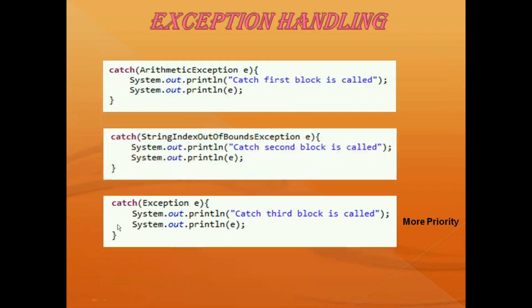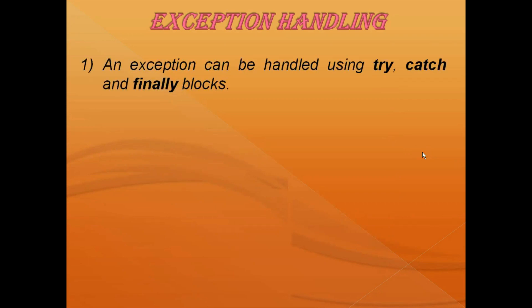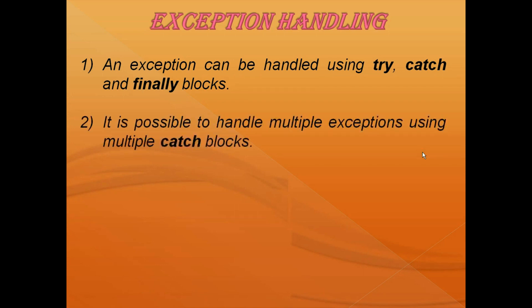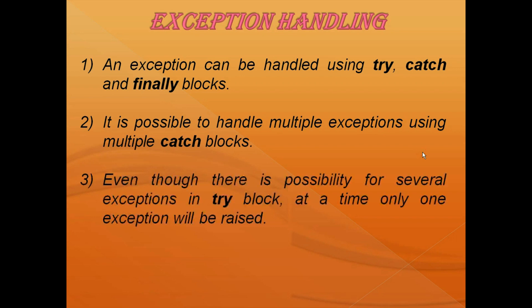Other exceptions like arithmetic exception or index out of bounds or some other type of exceptions will be above the general exception because they have lesser priority. Based on this discussion, please remember some important points. An exception can be handled using try, catch and finally blocks. It is possible to handle multiple exceptions using multiple catch blocks. Even though there is a possibility of several exceptions in a try block, at a time only one exception will be raised.